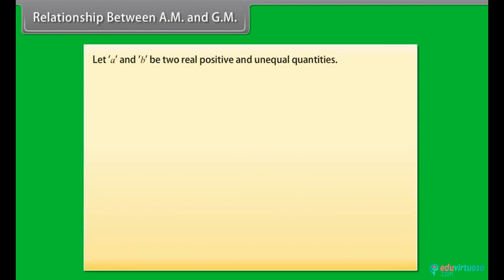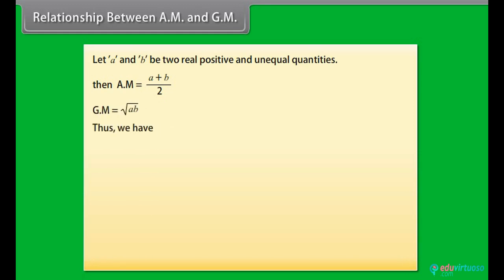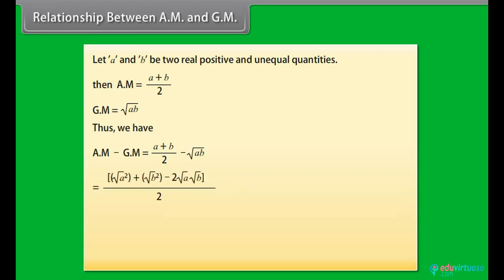Relationship between AM and GM: Let A and B be two real positive and unequal quantities. Then arithmetic mean = (A+B)/2 and geometric mean = √(AB). Thus AM − GM = (A+B)/2 − √(AB), and on solving it is found that the difference is greater than or equal to 0, meaning AM ≥ GM.